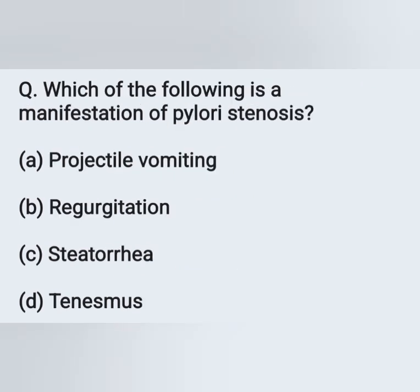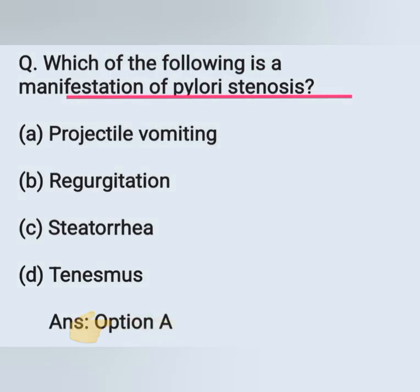Which of the following is a manifestation of pyloric stenosis? Option A: projectile vomiting. Option B: regurgitation. Option C: steatorrhea. Option D: tenesmus. One of the main manifestations of pyloric stenosis is projectile vomiting. So Option A is the correct answer.